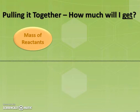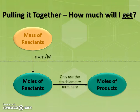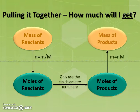It might be useful to have a little graphical visualization of how we can make this calculation. For the first question — how much product will you get, starting with the mass of reactants — we need to convert the mass of reactants to moles of reactants, apply the stoichiometry term to find the number of moles of product, and then convert back using our familiar equation to get the mass of products. This straightforward three-step process gives us our mass of products from our mass of reactants.